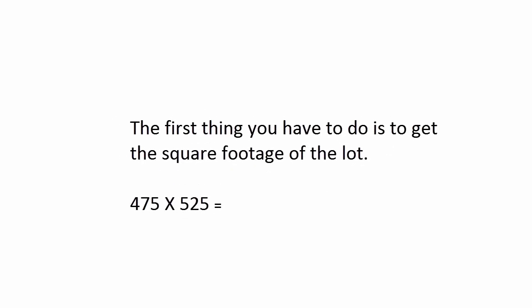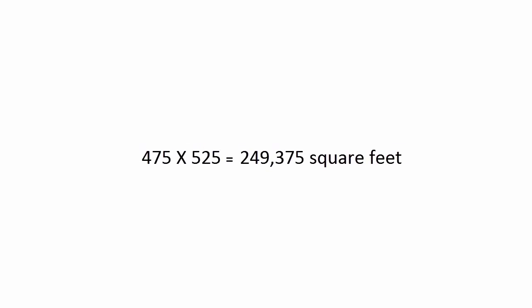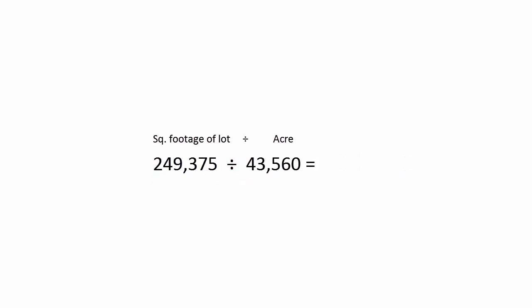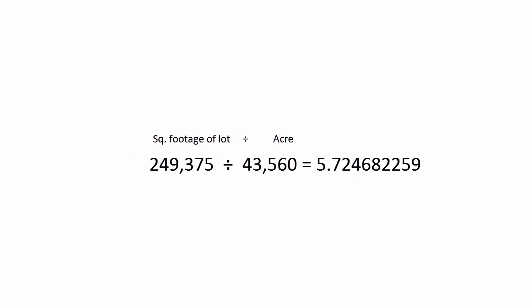Now, the first thing you have to do is get the square footage of the lot: 475 by 525, and that gives you 249,375 feet. Take that 249,375 and divide it by what an acre is. So, 249,375 divided by 43,560 will give you this long number — 5.724682259 on your calculator.